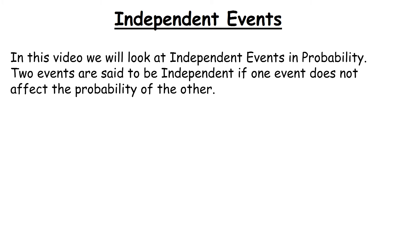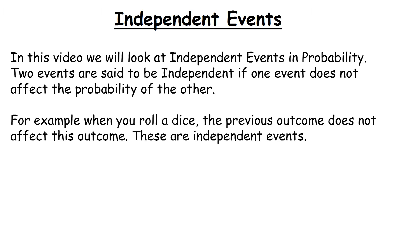Welcome to this video on independent events. Two events are said to be independent if one event does not affect the probability of the other. For example, when we roll a dice, the previous outcome does not affect the probability of the next outcome. If I roll the dice and get a 6, the next time I roll, I still have the same probability of getting a 6 — it's not changed by the previous roll. When this happens, these events are said to be independent.